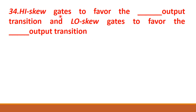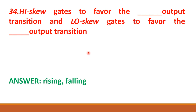High skew gates favor the rising output transition, and low skew gates favor the falling output transition.